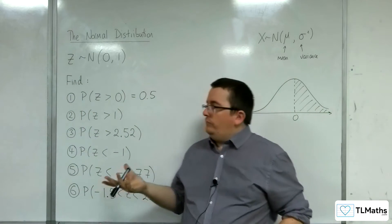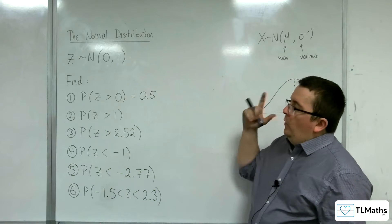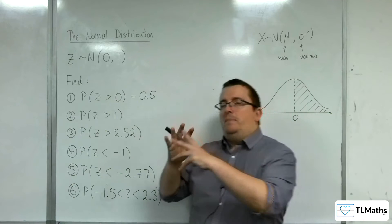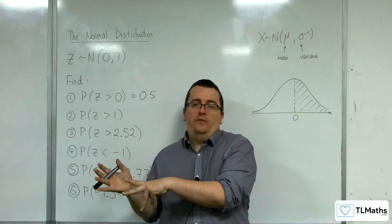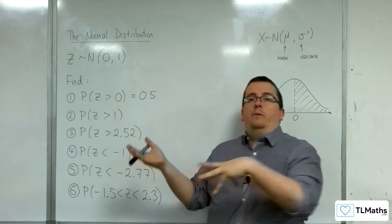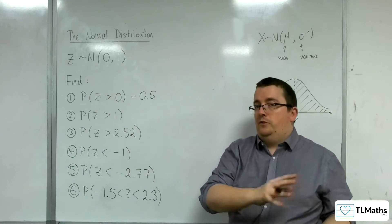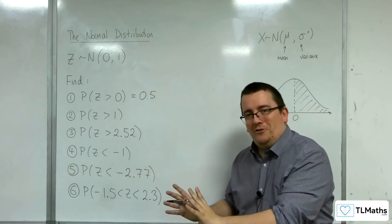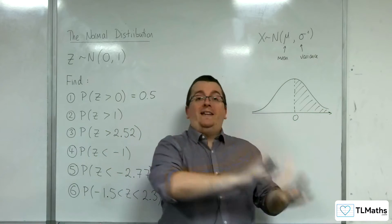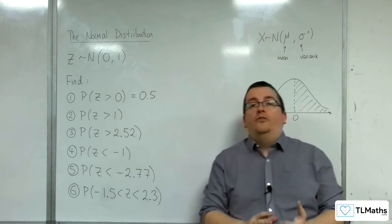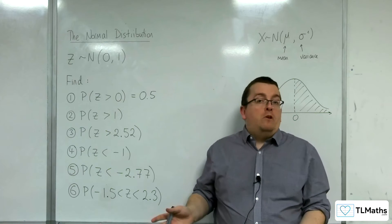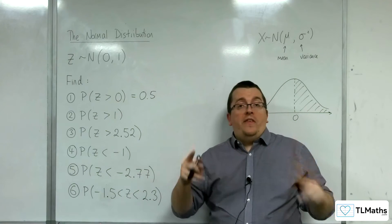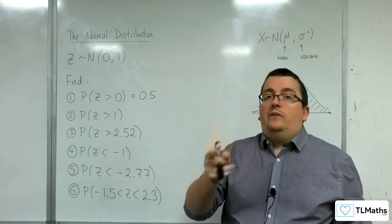Now, you might then think, well, if probability of Z being less than zero is 0.5, as we saw in the previous video, and the probability of Z being greater than zero is 0.5, what's the probability of Z being equal to zero? That's quite often a question that I get asked. The answer to that is that probability is zero.